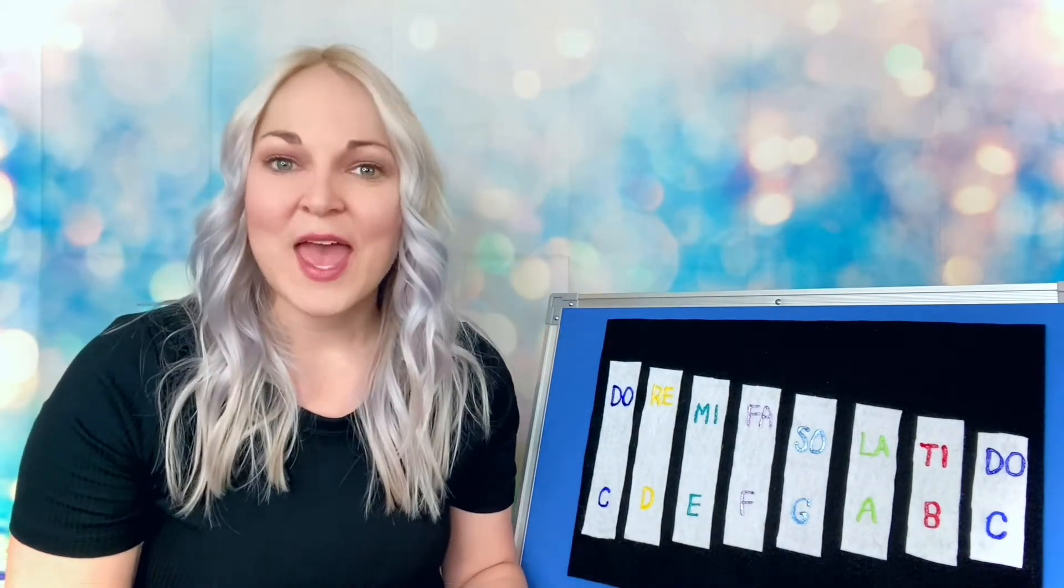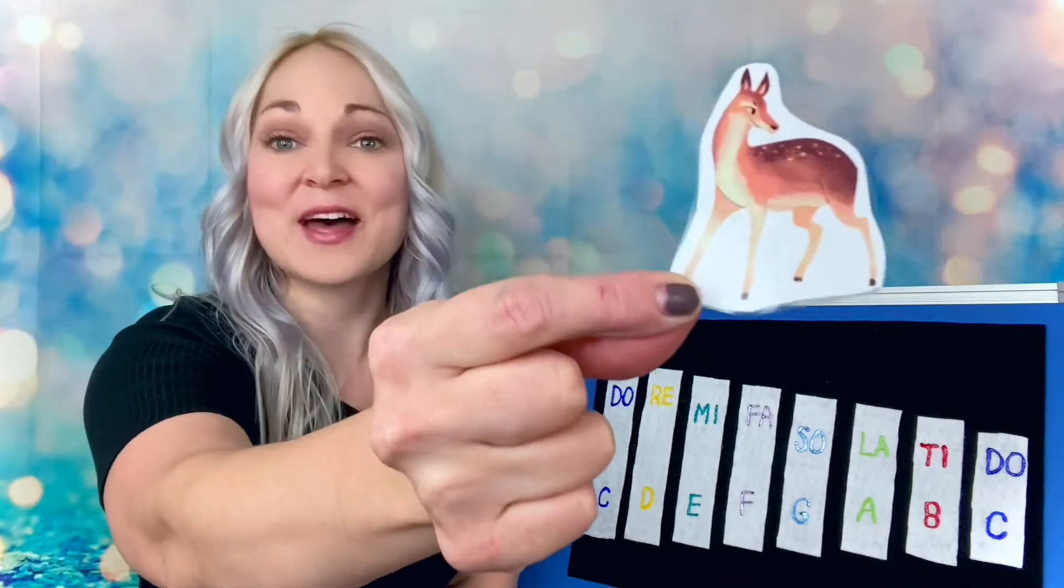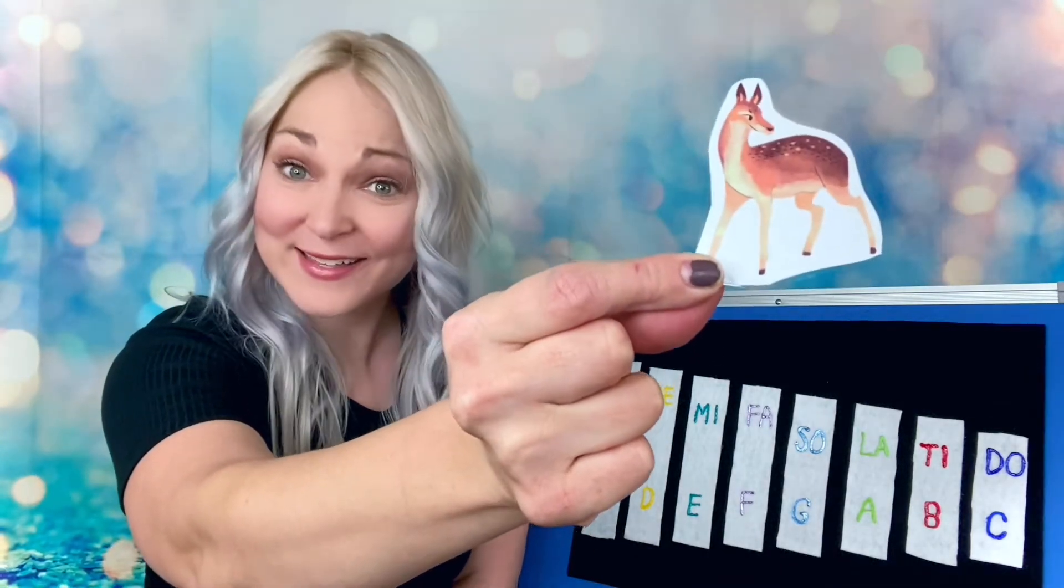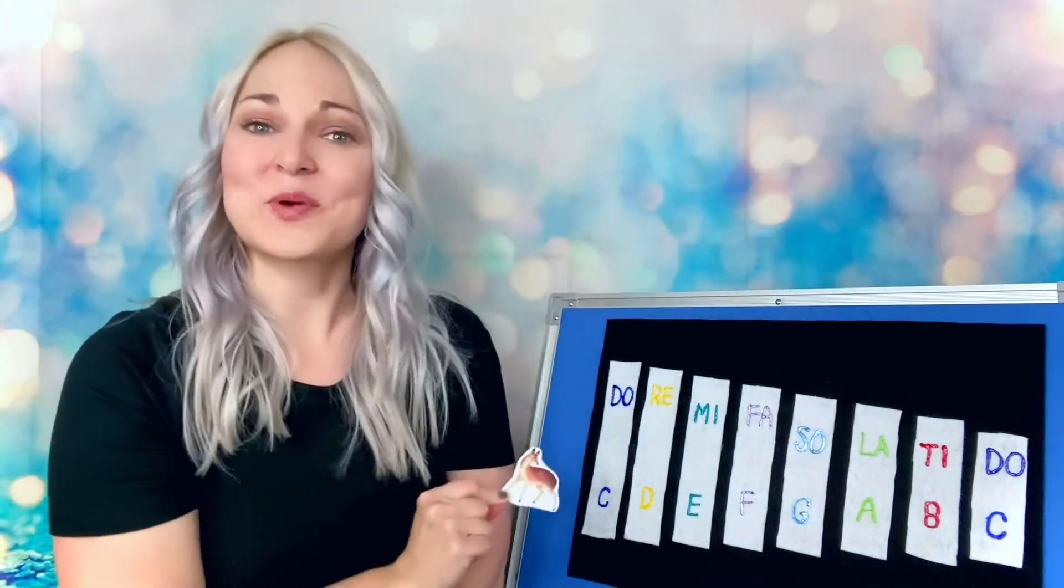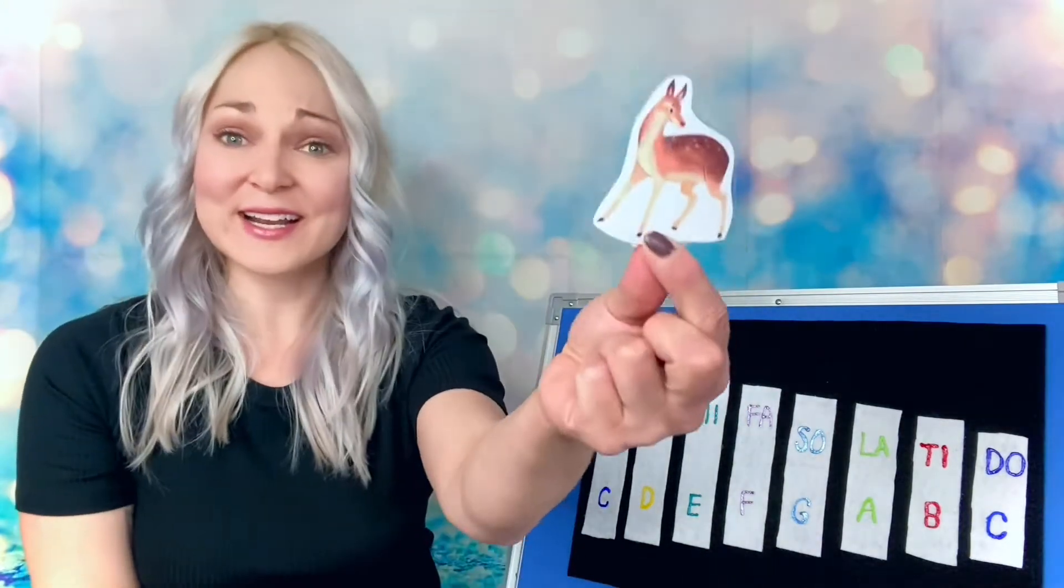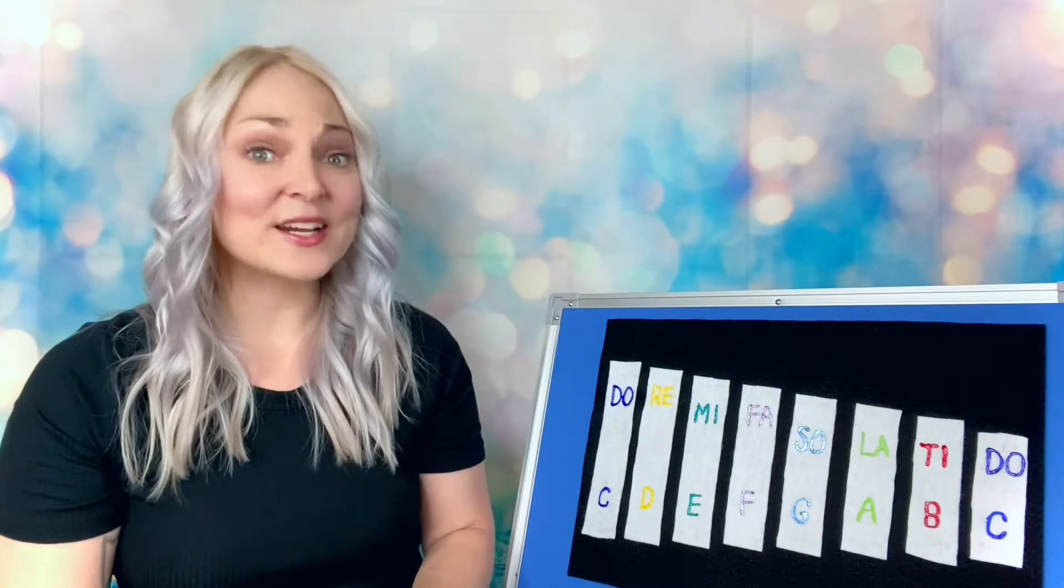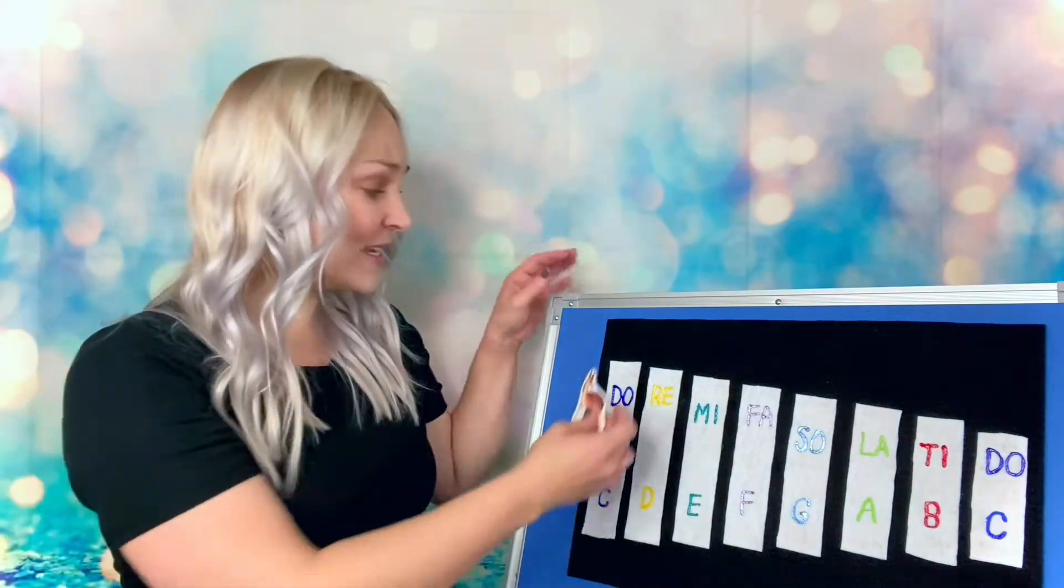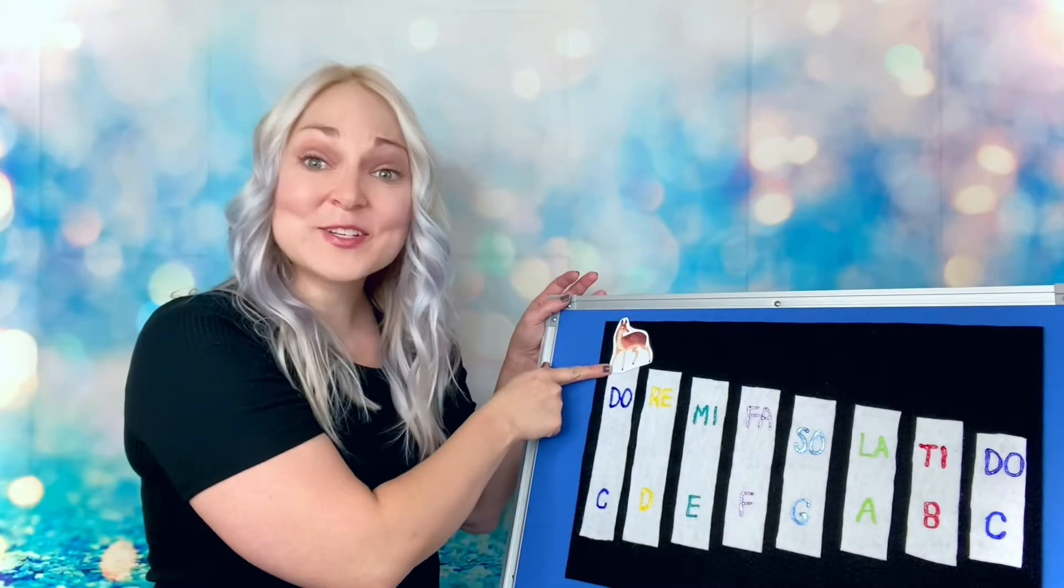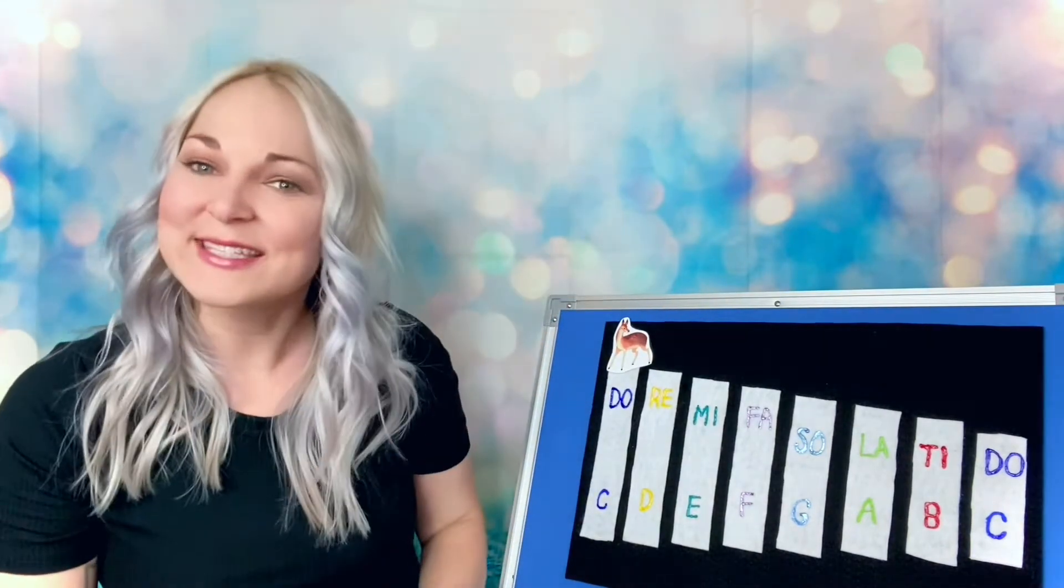So we're going to start with doe and I don't know if you know the animal that this is. Can you tell? Do is the word for a female deer. So we'll sing doe, a deer, a female deer. And we'll put the deer up by our doe, which is the note for C.